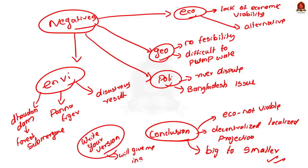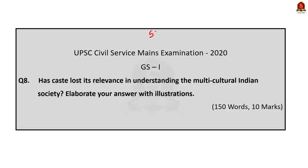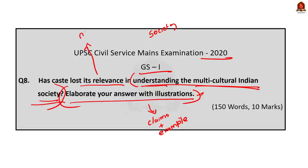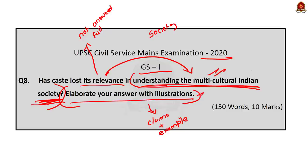Now let us discuss the next question from Indian society, which also appeared in the 2020 GS Mains Paper 1. The question is: 'Has caste lost its relevance in understanding the multicultural Indian society? Elaborate your answer with illustrations.' Two things to note: first, you must give examples for every claim you make. Second, the question asks whether caste has lost its significance in understanding Indian society — stress on the 'understanding the Indian society' part, not just whether caste is relevant or not.